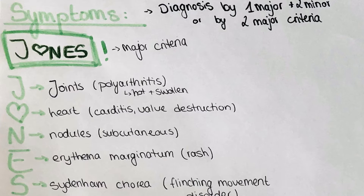There is a mnemonic for the major criteria which is JONES, where J is for joints — because in rheumatic fever, polyarthritis is often seen where the joints appear hot and swollen. The O (heart symbol) is for carditis and valve destruction, which I will explain a little bit later.